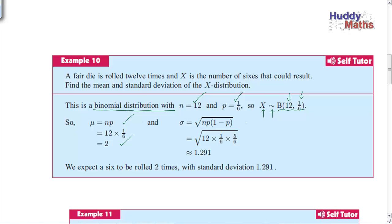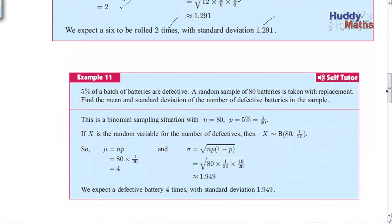And sigma, here it is, square root NP times one minus P, and N is 12, probability of success is one sixth, and non-success or failure is five sixths. So we expect the six to be rolled two times, twice, in this distribution of 12 trials and a standard deviation of 1.29. So that's all we're going to do for this binomial distribution, just those two calculations.